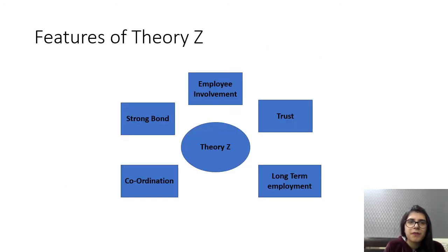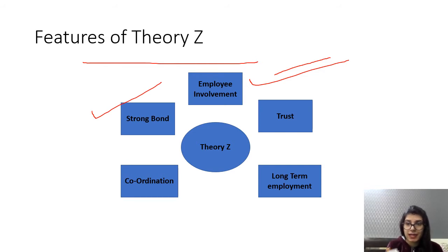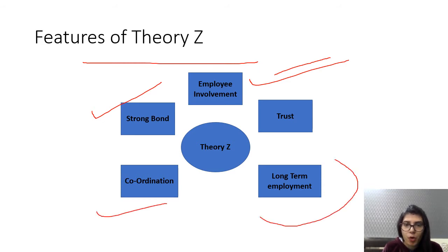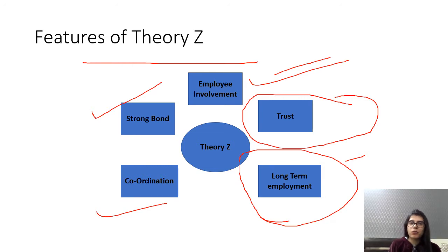The main features of Theory Z are: employee involvement in decision-making, strong bonds between employees and employers and among employees themselves, coordination, long-term employment which ensures job security, and trust between employees and management. These are all the features of Theory Z.